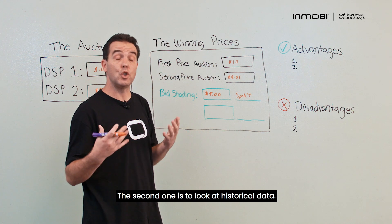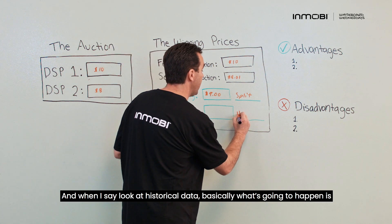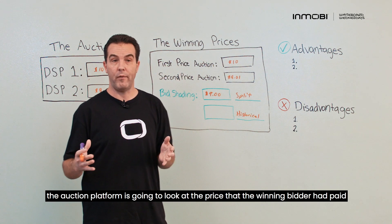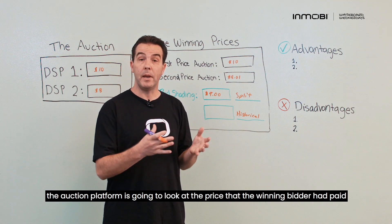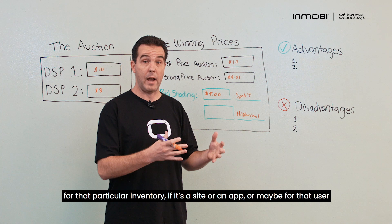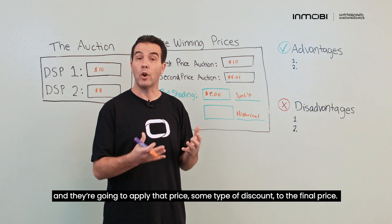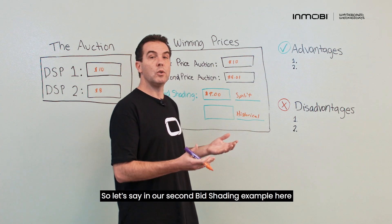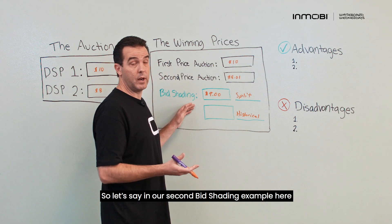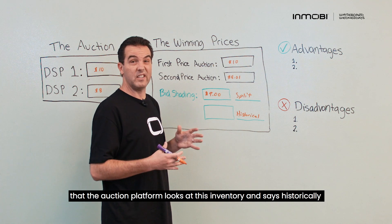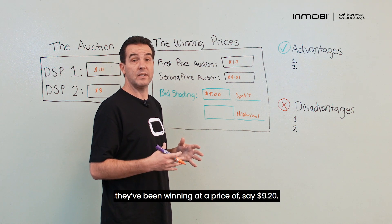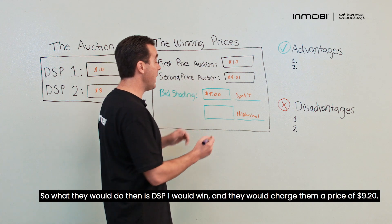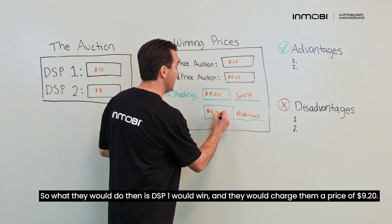The second method is to look at historical data. The auction platform looks at the price that the winning bidder paid for that particular inventory — whether it's a site, an app, or for that particular user — and applies some type of discount to the final price. In our second bid shading example, if the auction platform looks at this inventory and sees they've historically been winning at $9.20, then DSP1 would win and be charged $9.20.